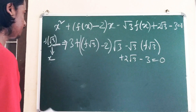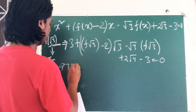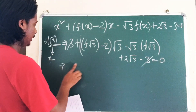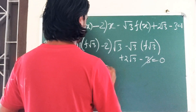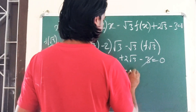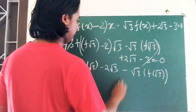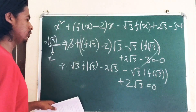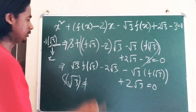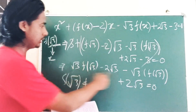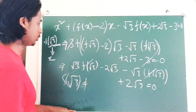After substitution, 3 and -3 cancel out. We are left with √3·f(√3) - 2√3 - √3·f(√3) + 2√3 = 0. The √3·f(√3) terms cancel each other, giving us 0 = 0, which is always true.